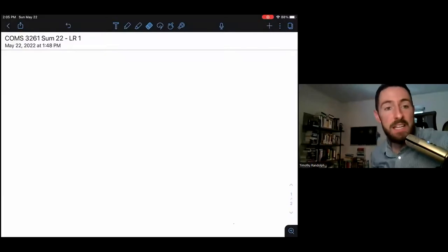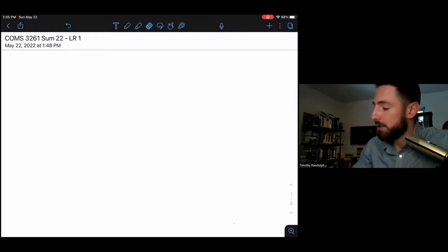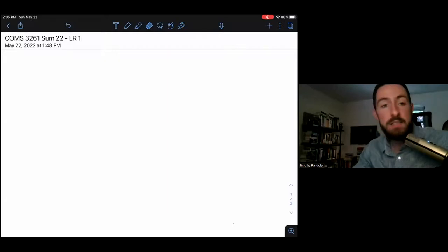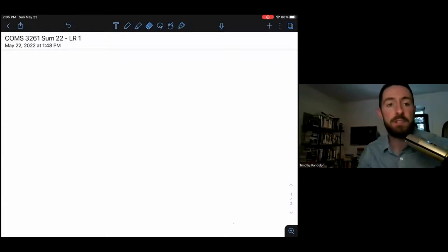All right, welcome to our first lightning review video for computer science theory, summer 2022. This video is a companion for lecture one. We're going to be going over alphabets, strings, languages, and then the state diagrams and formal definitions for deterministic finite automata.